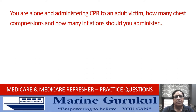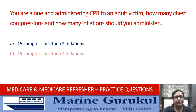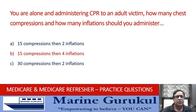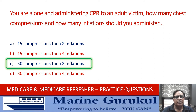You are alone and administering CPR to an adult victim. How many chest compressions and how many inflations should you administer? 15 compressions and 2 inflations; 15 compressions and 4 inflations; 30 compressions and 2 inflations; or 30 compressions and 4 inflations. The answer is C — 30 compressions and 2 inflations.